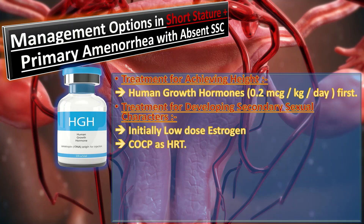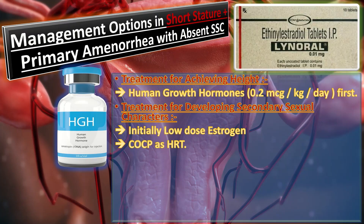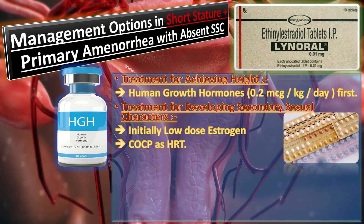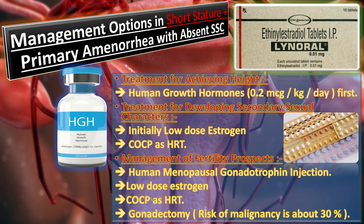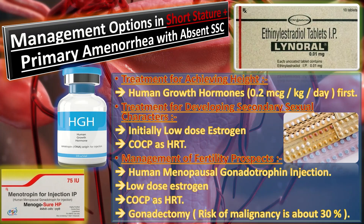For development of secondary sexual characteristics, initially low-dose estrogen at 0.1 mg ethinyl estradiol is given twice daily for three weeks every month for several months. Once secondary sexual characteristics develop, patients are started on combined oral contraceptive pills as HRT. Ovulation can be induced using human menopausal gonadotrophin injection.